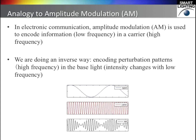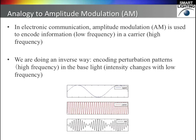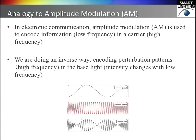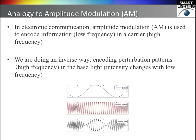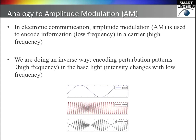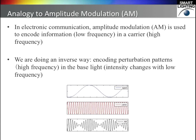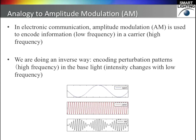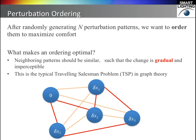We can compare the concept of perturbation modulation to amplitude modulation in electronic communication. In AM, the low-frequency signal is encoded in a high-frequency carrier. What we do is the inverse: the perturbations are the signals and they are the high-frequency components. After we have generated the perturbations, we want to put them in a good order. We want the light to change gradually, such that it is imperceptible. This is a graph problem and can be solved by any algorithm for the traveling salesman problem.